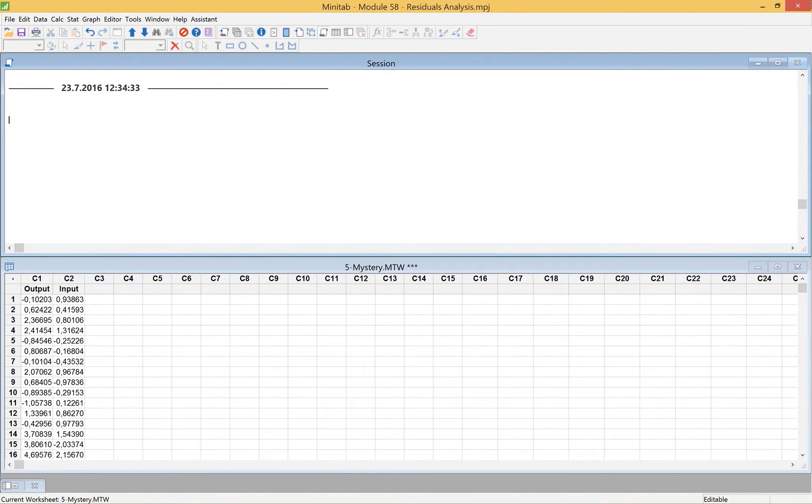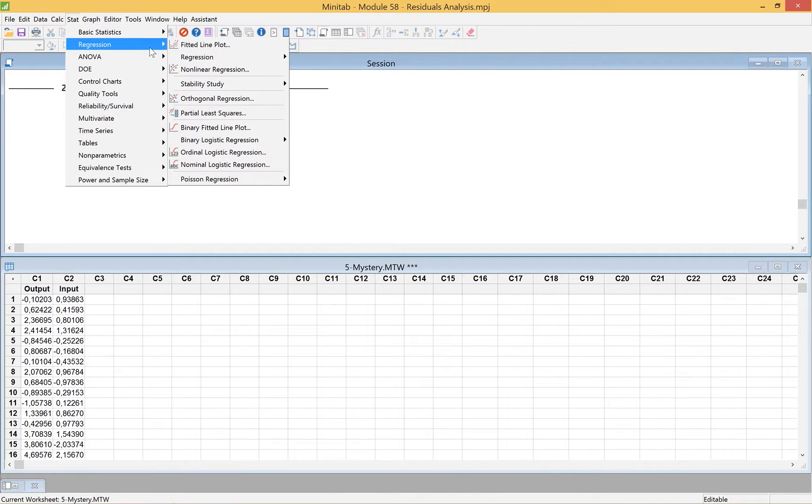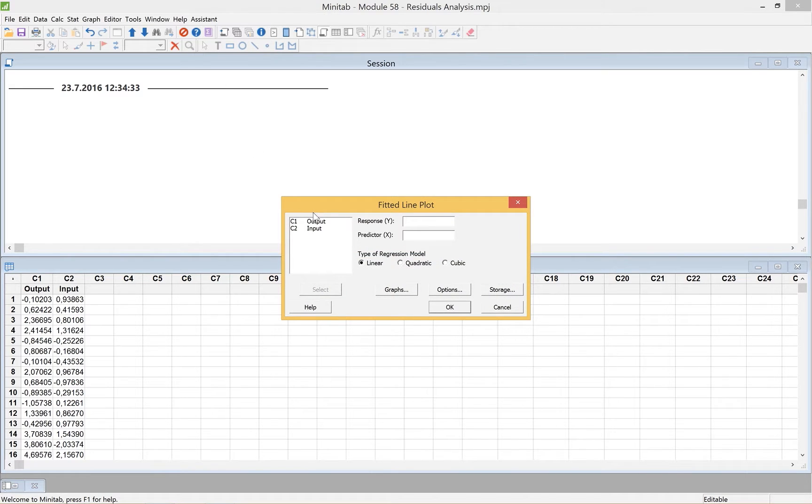If we take a look at this, we have a data file set up here. It's a simple one - output and input. We're going to go to Stat, Regression Analysis, and a Fitted Line Plot. This is the way you would want to analyze this. We see that the response is output. We double-click on that, and then it's input.